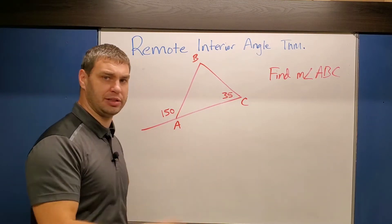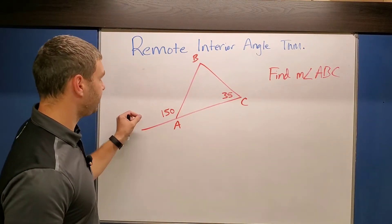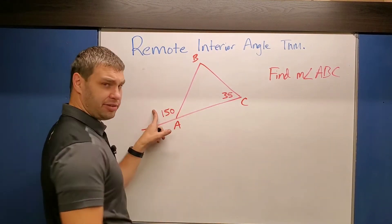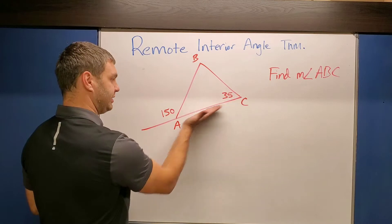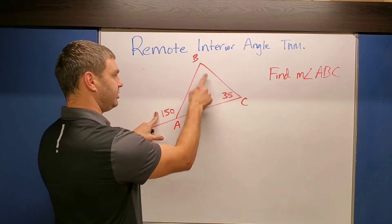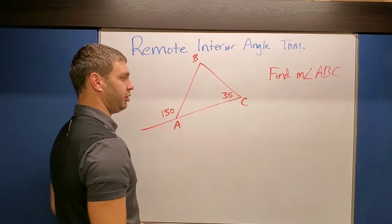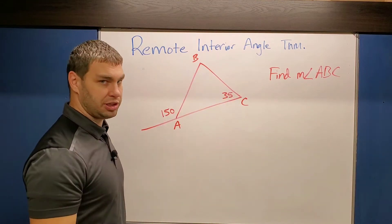So let's see if we can do this one fast. The remote interior angle theorem says that if I have an exterior angle of a triangle, which means I extend one of those lines, then if I add these two angles up on the remote side, not the one next to it but the ones remote or farther away, those are going to equal each other.